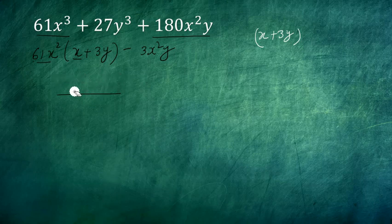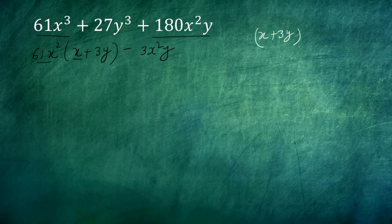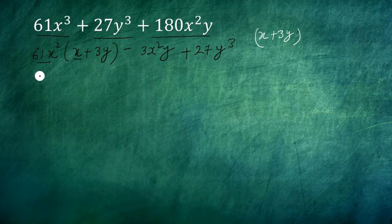After subtracting, we will write the remaining quantity. This is the remaining quantity, which is 27y³. You can write this expression.